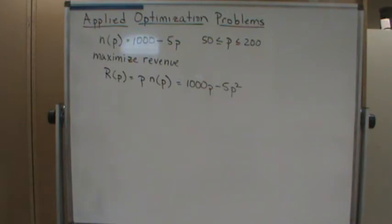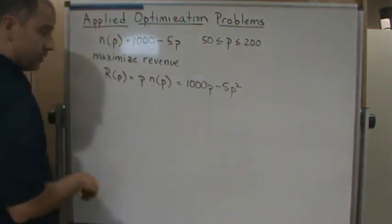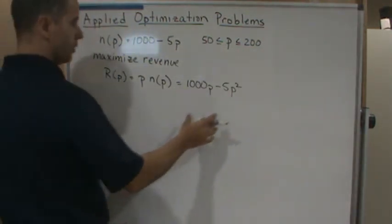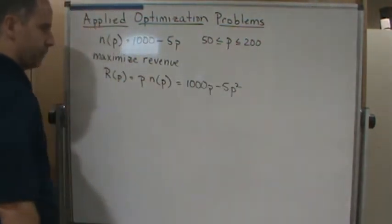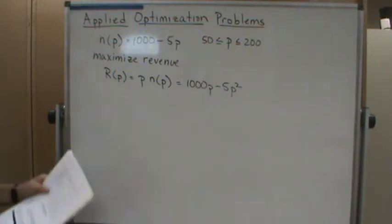Now notice this revenue function is quadratic. This curve represents a parabola that opens downward, so we know on this closed interval there is a maximum. The maximum might happen at the endpoints, but since the parabola opens downward, there is a maximum point within the interval.